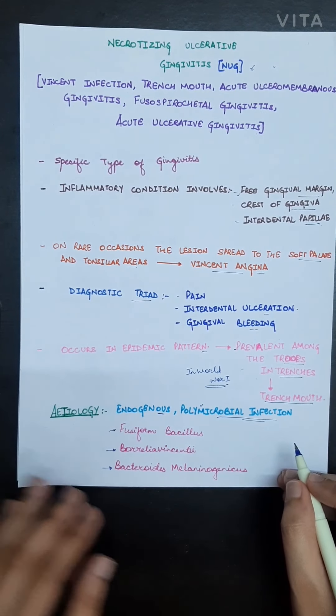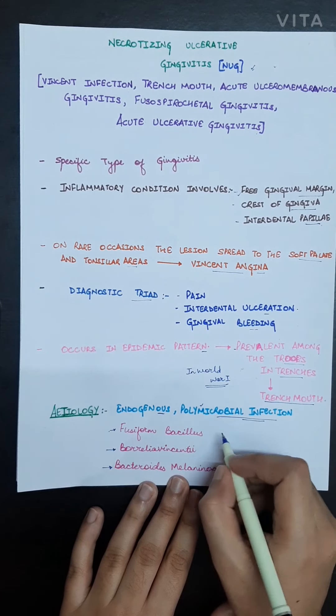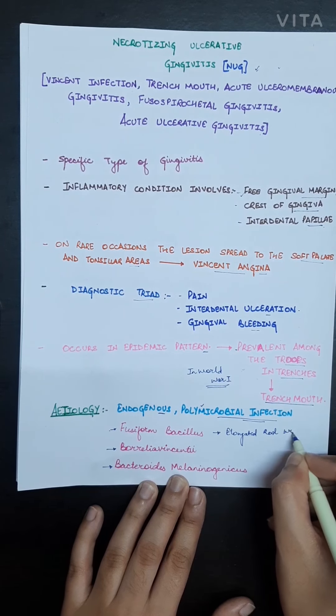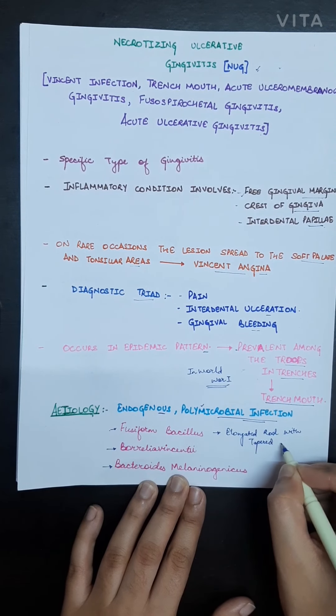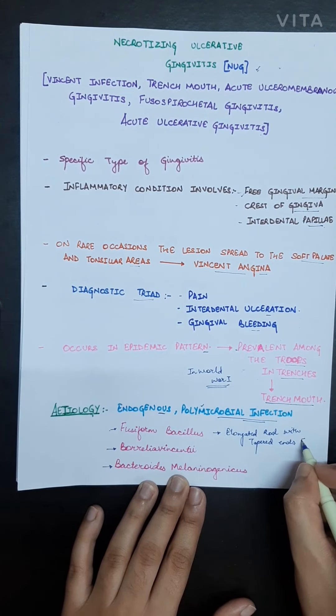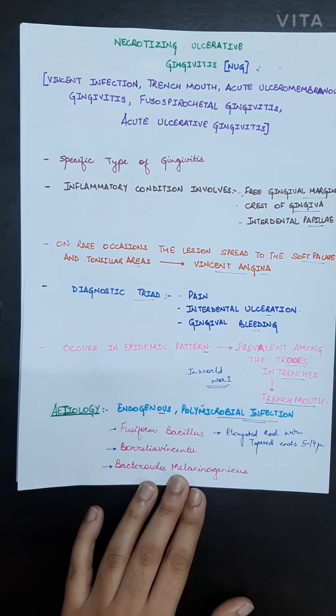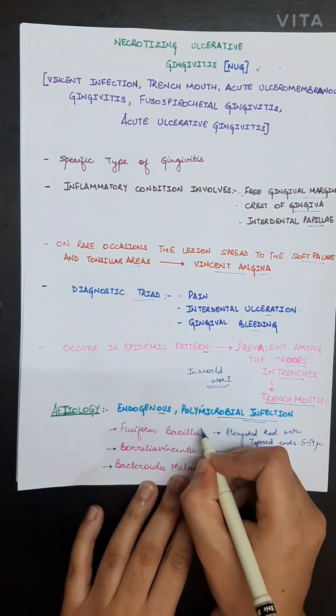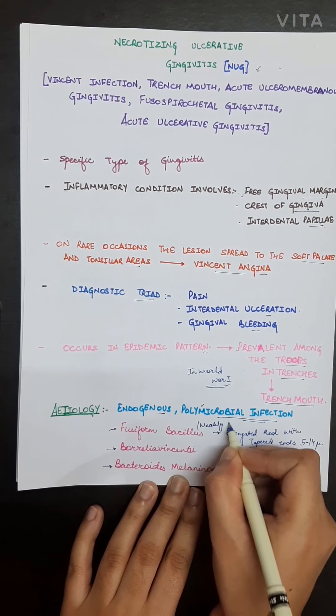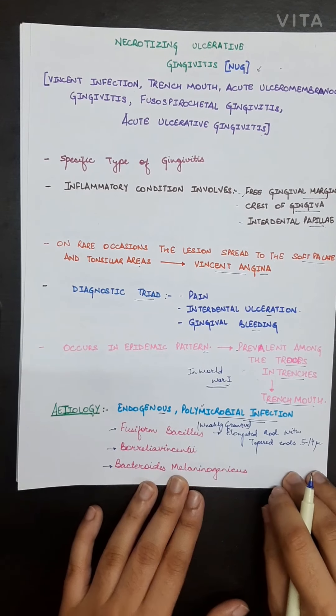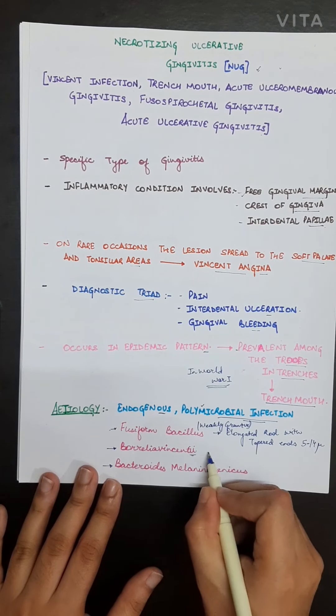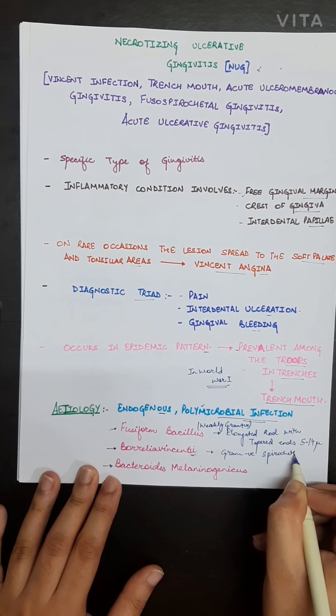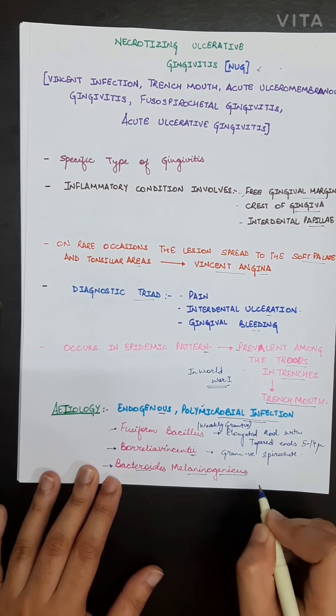Fusiform bacillus is basically an elongated rod with tapered ends. It measures up to 5 to 14 microns in length. It is non-motile and weakly gram positive. The next one is Borrelia vincenti, which is a gram negative spirochete. It may also occur due to Bacteroides melanogenicus.